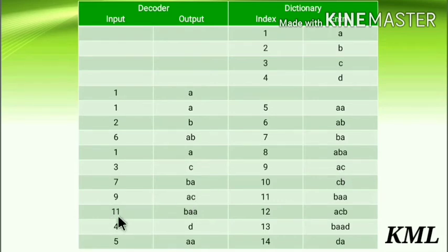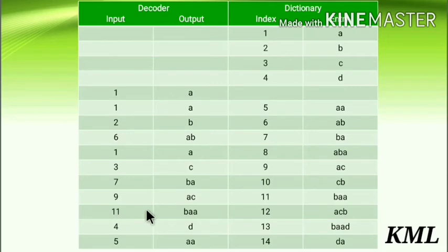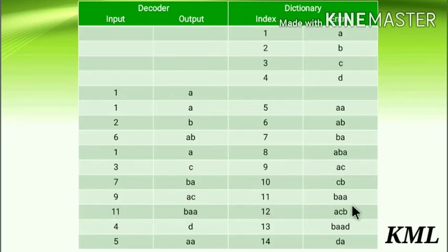Next input is 11. It is already in the dictionary. Enter in the dictionary: prior_string 'ac' plus first symbol of the string of codeword 11. String of codeword 11 is 'baa', first symbol is 'b', so we get 'acb'. Increment index and output the string of 11, which is 'baa'.